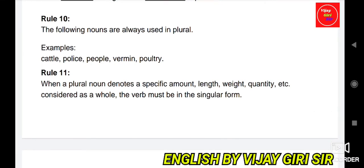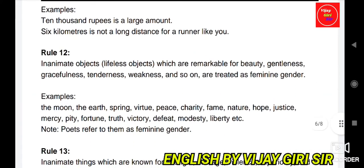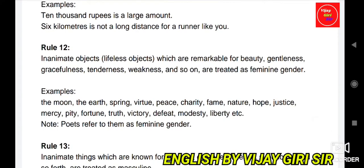Rule 11: When a plural noun denotes a specific amount, length, weight, quantity, etc. considered as a whole, the verb must be in the singular form. For example, '10,000 rupees is a large amount' — the verb is placed according to the whole amount, not according to 'rupees'. '6 km is not a long distance for a runner like you' — we use 'is' because 6 is considered as a single unit.